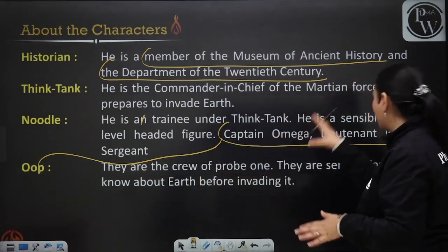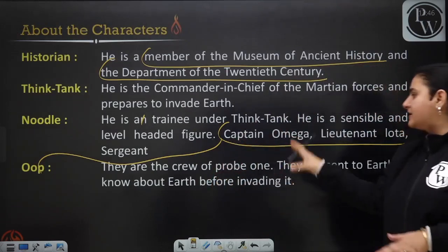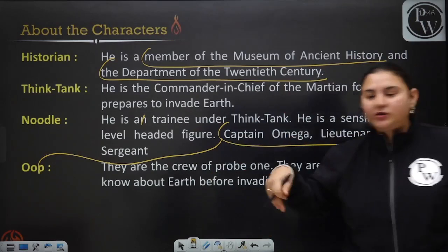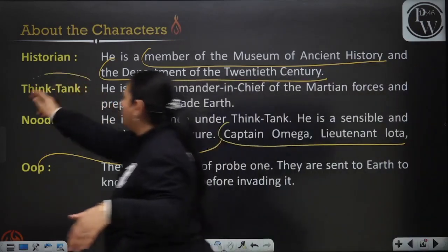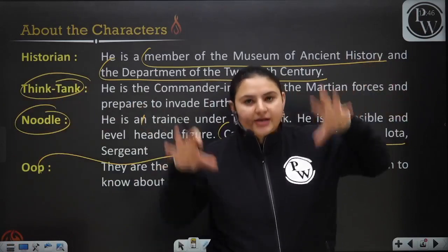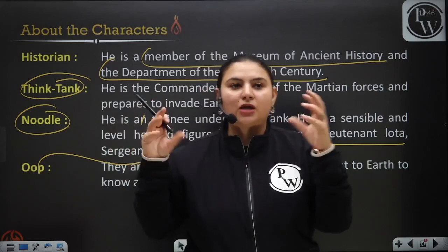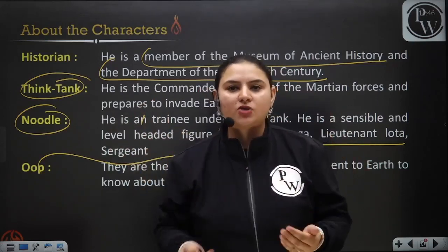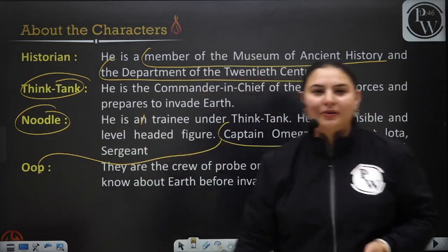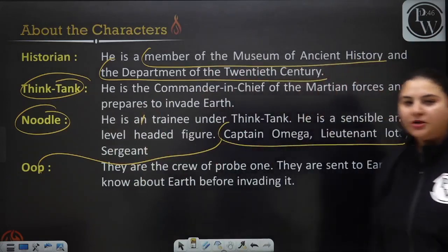Then we meet Captain Omega, Lieutenant Iota, and Sergeant Ope. All these characters are the crew of Probe One and they are the ones sent to Earth. Think Tank and Noodle are on Mars, sitting in the Mars Space Control Centre giving instructions, while Captain Omega, Lieutenant Iota, and Sergeant Ope are present on Earth to gather information.